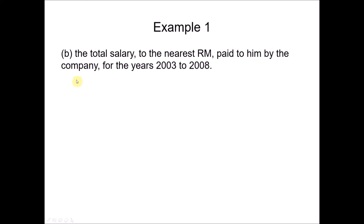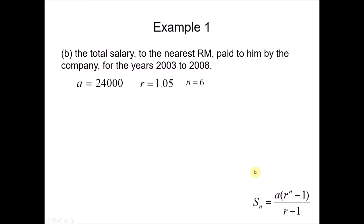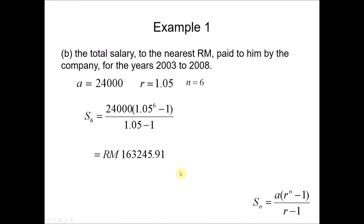For part B, we find the total salary paid from 2003 to 2008. Since we want the total over 6 years, we use S_n where n = 6, a = 24,000, and r = 1.05. Since r > 1, we use the appropriate formula. Calculating this gives the total salary paid to Charles over the six years.